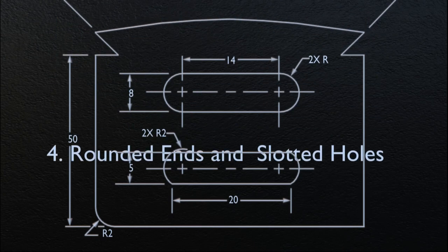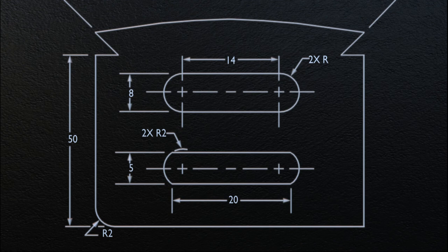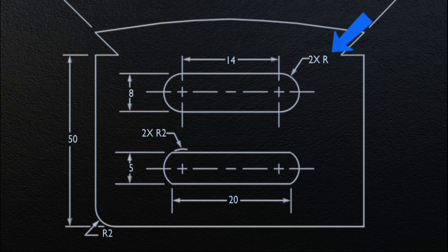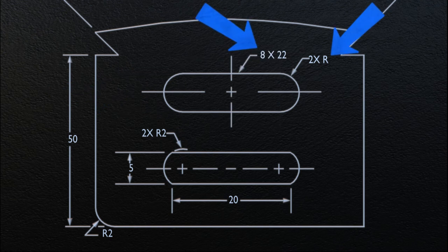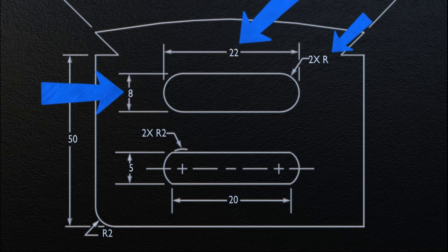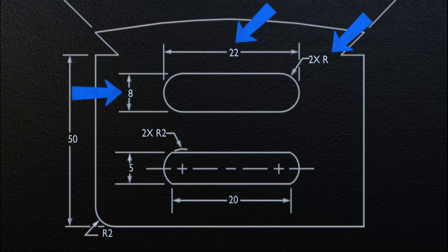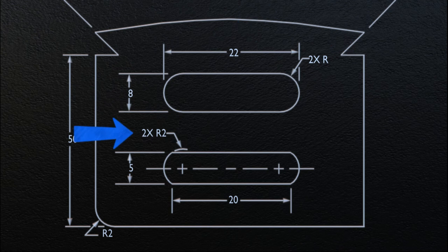Next, we will discuss rounded ends and slotted holes. Features having rounded ends, including slotted holes, are dimensioned using the following methods. The first way is illustrated on the screen, which shows two dimensions and indicates the radius. For fully rounded ends, the radii are indicated but not dimensioned, because the value of the radius can be calculated based on this dimension. The second way is to indicate the two dimensions as indicated, and the radius depiction remains the same. The third way is to show the overall dimensions, as compared to the first way, which shows the longitudinal dimension between the centers. For features with partially rounded ends, the radii are dimensioned as shown.